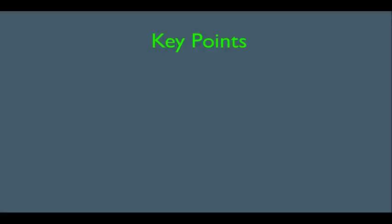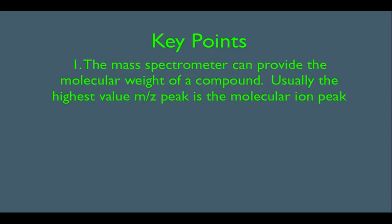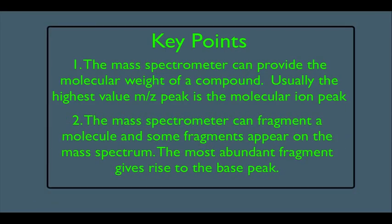In this online lecture, I'm going to introduce you to the mass spec machine. We're going to talk about how it works and roughly how to read the data. The key points are: number one, the mass spectrometer can provide the molecular weight of a compound — usually the highest value m/z peak is the molecular ion peak. Number two, the mass spectrometer can fragment a molecule, and some fragments appear on the mass spectrum. The most abundant fragment gives rise to what's called the base peak.